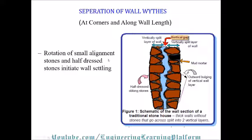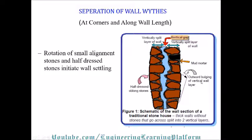Rotation of small alignment stones and half-dressed stones initiate wall settlement. This is an example of how stone settlement is initiated — the vertically split layer of the wall should not be present in most stone structures. Most codes provide provisions for how high a wall should be to avoid slenderness effects, and most cases of bulging are caused by ground vibrations or improperly compacted soil or foundation.